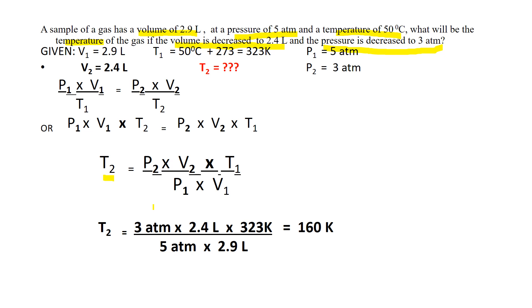This is the equation for T2. Substitute the given values: 3 atmospheres times 2.4 liters times 323 Kelvin divided by 5 atmospheres times 2.9 liters. Cancel the units — atmospheres and liters cancel — and the resulting unit is Kelvin. The answer is 160 Kelvin.